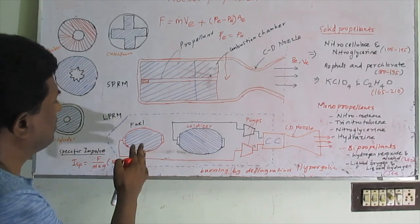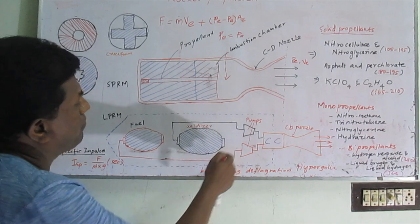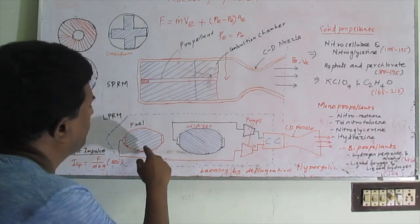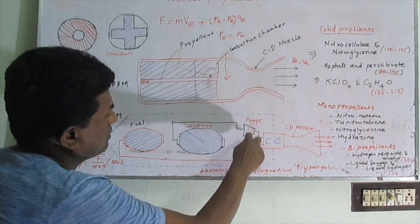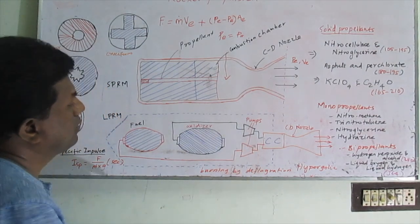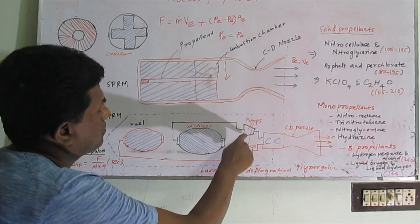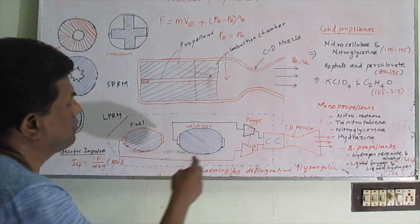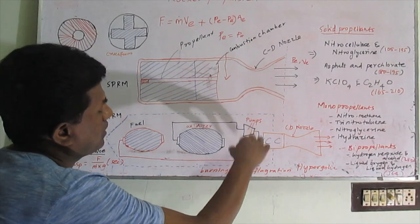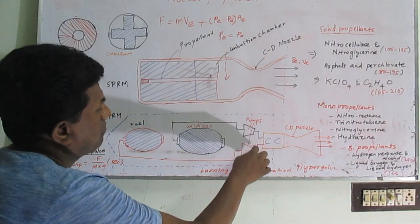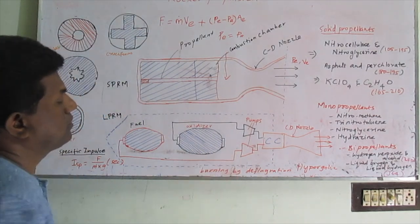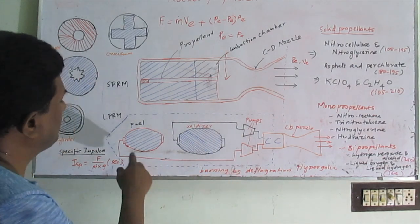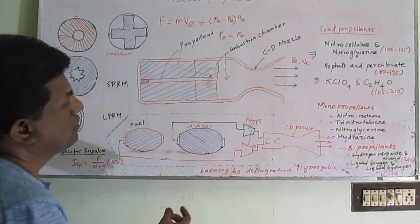In the pump feed system, pumps are connected before the fuel and oxidizer. The pumps suck the liquid from both the oxidizer and fuel tanks, then pressurize them before they reach the combustion chamber. Using either the pressure feed or pump feed system, liquid propellant rocket motors can be operated.